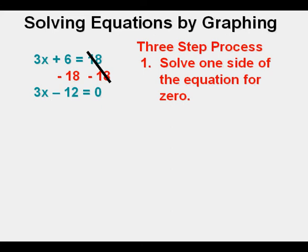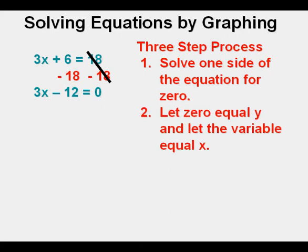And the right side simplifies to zero. Now step two. Let zero equal y and let the variable equal x. Here is step two in place. The zero is changed to a y. I also flipped the equation for cosmetic purposes. This flipping of the equation is done using the symmetric property of equality.